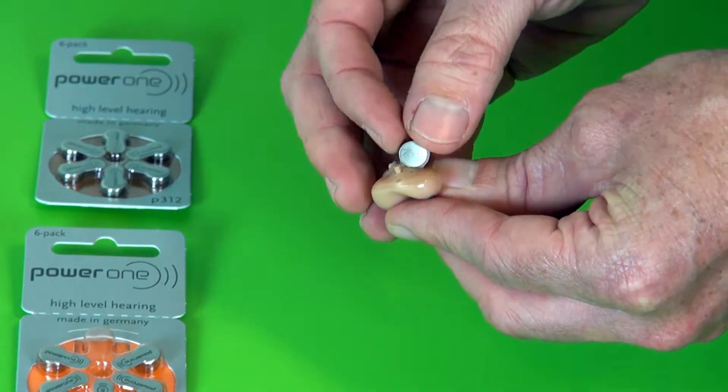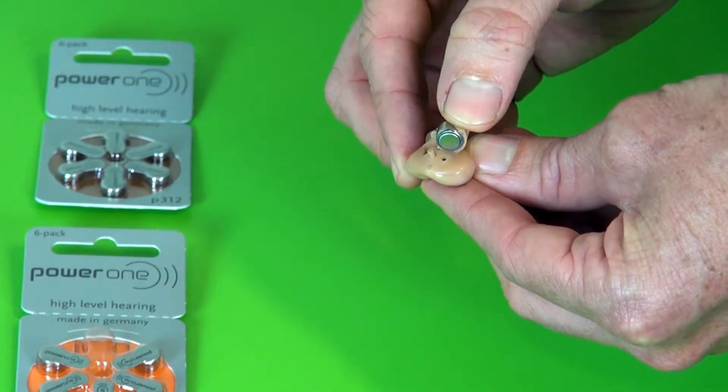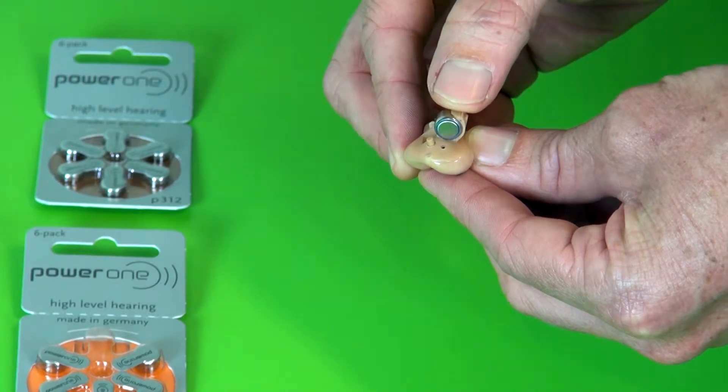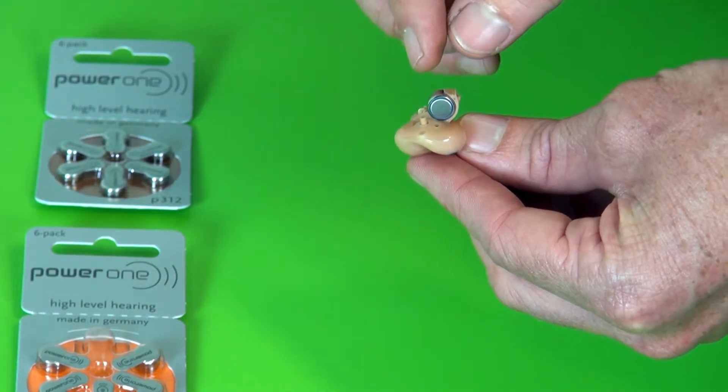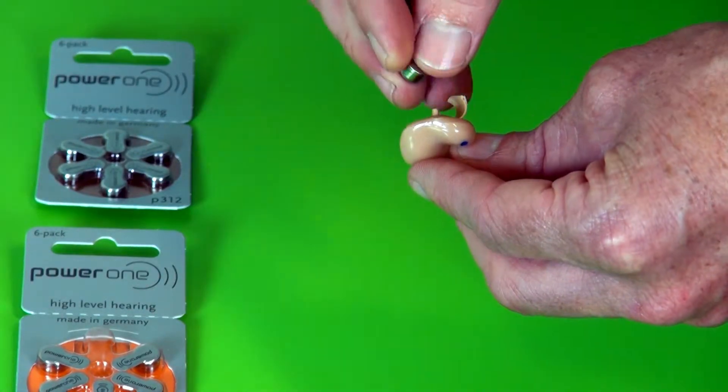If you put the battery in the wrong way, the battery door won't close. If you force it you are more than likely going to break the battery door. So just pay particular attention to make sure the battery is in the right way.